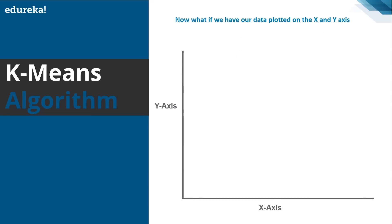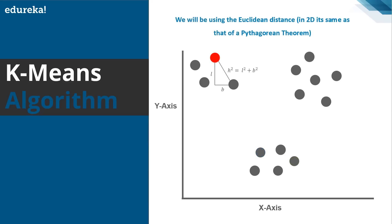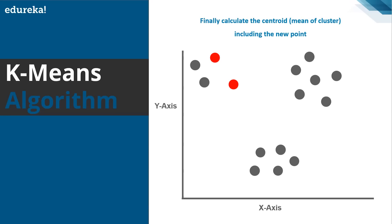Now, what if we have 2D data plotted on a graph with X and Y axes? Even in this case, we start by picking three random points as the centroids. We use the Euclidean distance to find the distance between two points in 2D — this is the same as the Pythagorean theorem: H² = L² + B², where H is the hypotenuse, L is the length or height, and B is the base. Then, just like before, you assign each point to the nearest cluster, calculate the mean of the cluster with the new point, and use this mean to determine distance from the cluster.